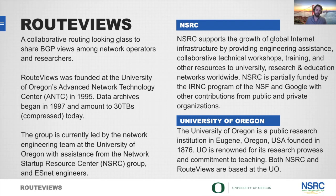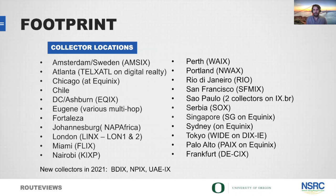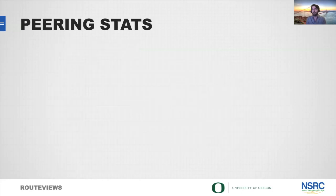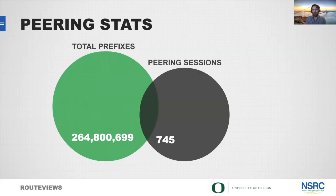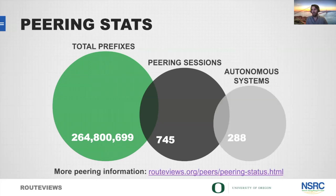Here's a quick rundown of the collector footprint for Route Views. As you can see, we've got a pretty geographically diverse footprint in terms of where our collectors are located. London LINX is here today and I'm happy we're able to have a collector there. In terms of peering stats, we see about 260 million prefixes, 745 peering sessions give or take, and about 288 unique autonomous system numbers. For up-to-date peering information there's a link at the bottom of the page.